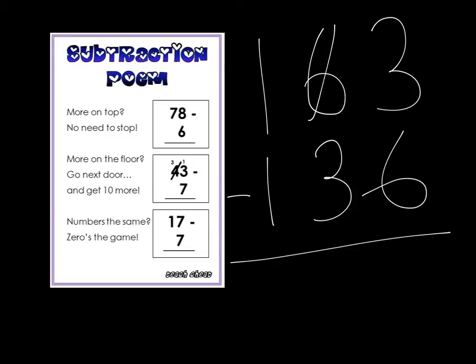So I cross out the six and I change it to five because I've taken away a ten. And I move that ten over to the units column, which makes it 13 take away six. Now, thirteen take away six is going to give me seven. Five take away three is going to give me two. One take away one is nothing or zero. So we don't need to do that one. So it is twenty-seven left.